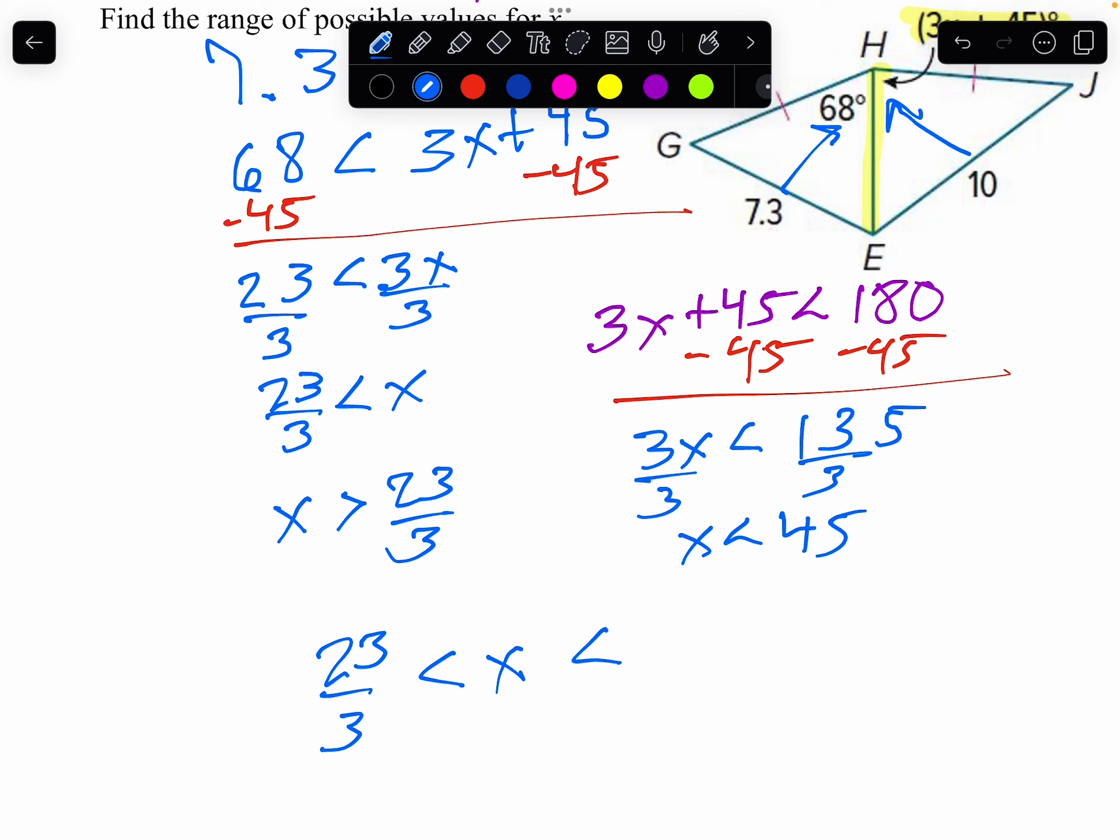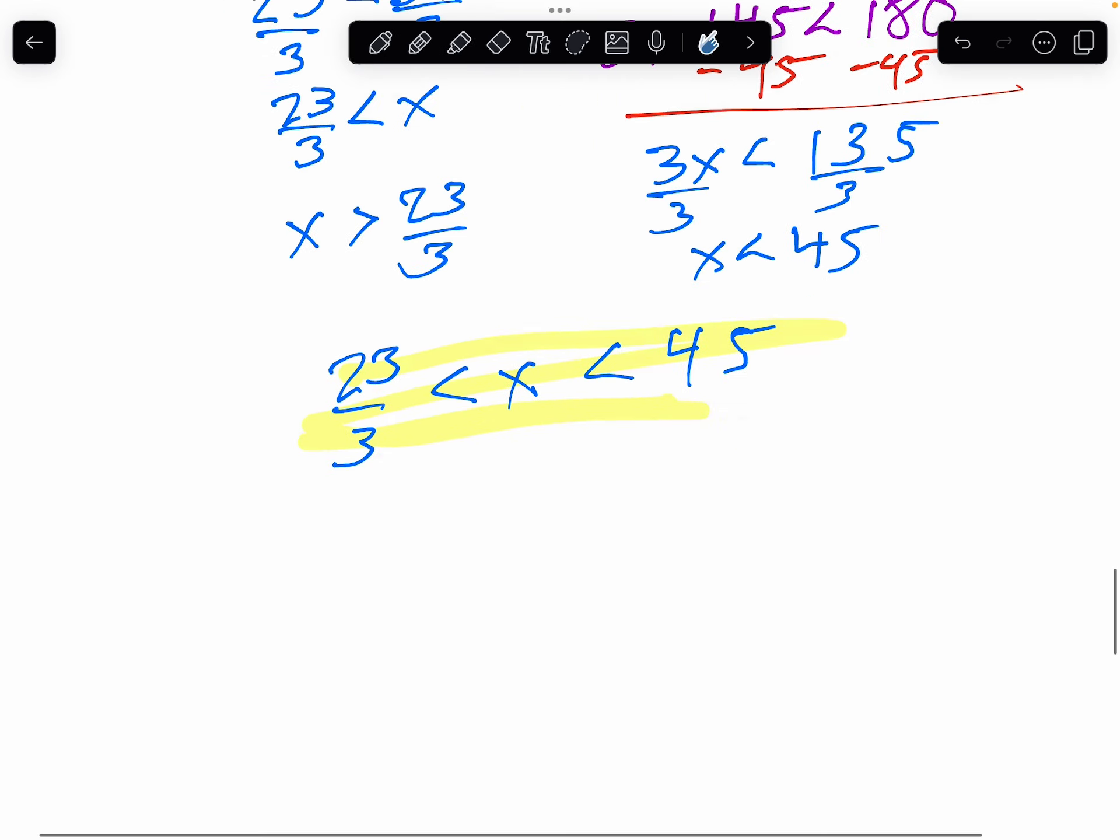And once again, it doesn't include those. So it can't be 23 thirds. And 23 thirds is kind of a ridiculous number anyway. And it's less than 45. So we're going to say between those two.